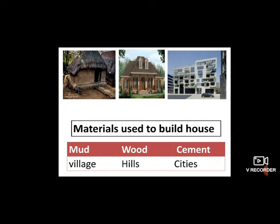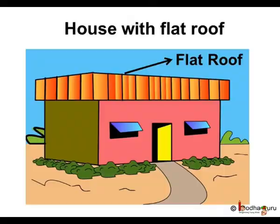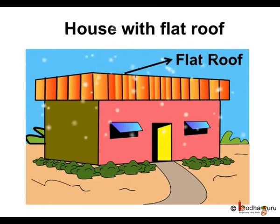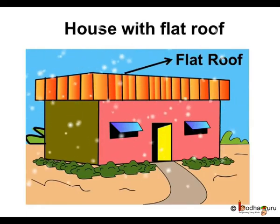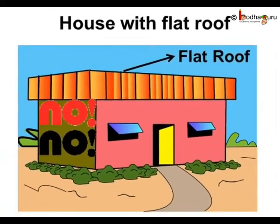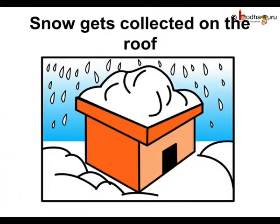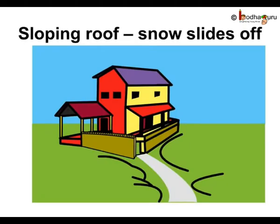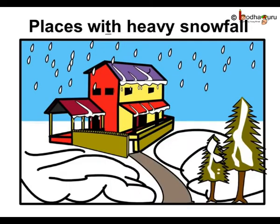Now students, listen to one more point very carefully. Houses are made according to the climatic conditions of a particular place. Can we have houses with flat roofs in places of heavy snowfall? No — the snow gets collected on the rooftop and it would be very difficult to remove. Hence, houses in such areas have sloping or slanting roofs, so that the snow can slide off easily.